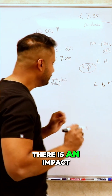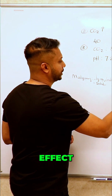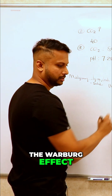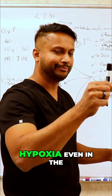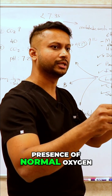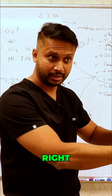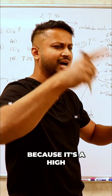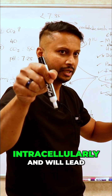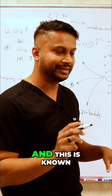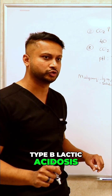Beyond that, there is an effect we call the Warburg Effect. Whenever you have increased cell activity, you can cause cellular hypoxia even in the presence of normal systemic oxygen — meaning the patient is not hypoxic, the pulse ox looks great, but those cells are not getting enough oxygen due to high cell activity. This leads to decreased intracellular oxygen and anaerobic glycolysis. This is the Warburg Effect, and it is why malignancies can cause a type B lactic acidosis.